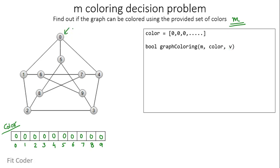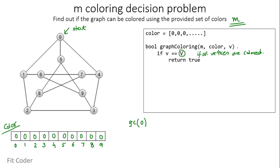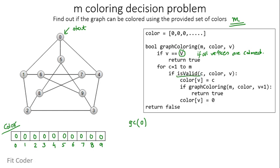We start the traversal from vertex 0. We check whether V equals capital V — the number of vertices — meaning all vertices are colored, in which case we return true. We do a for loop for C equal to 1 to M, trying each color. We check an isValid condition: if any adjacent vertex of V has the same color, we return false.